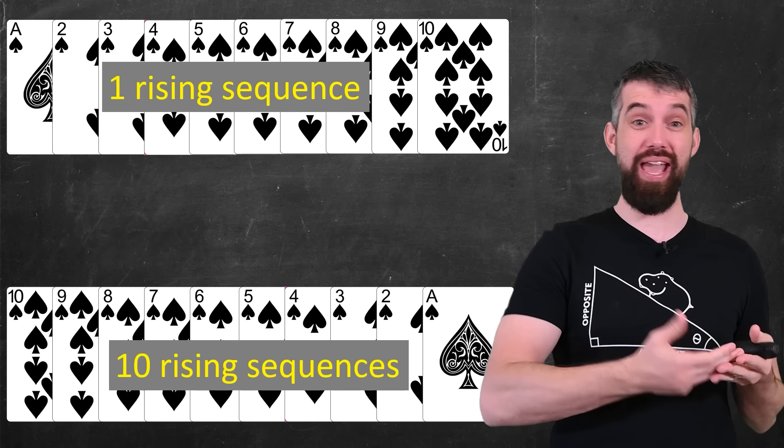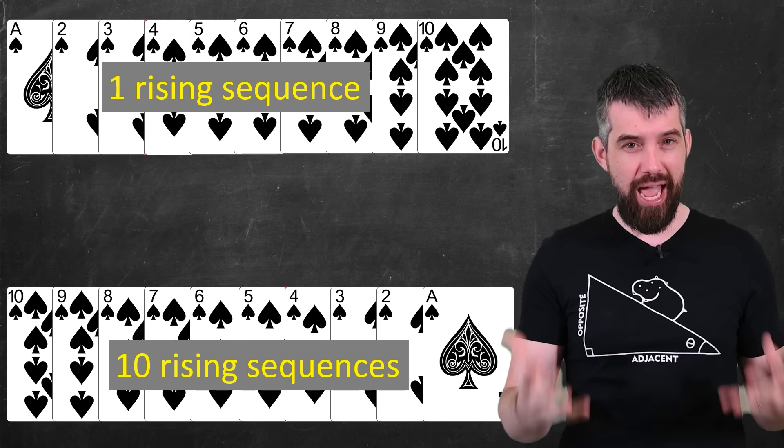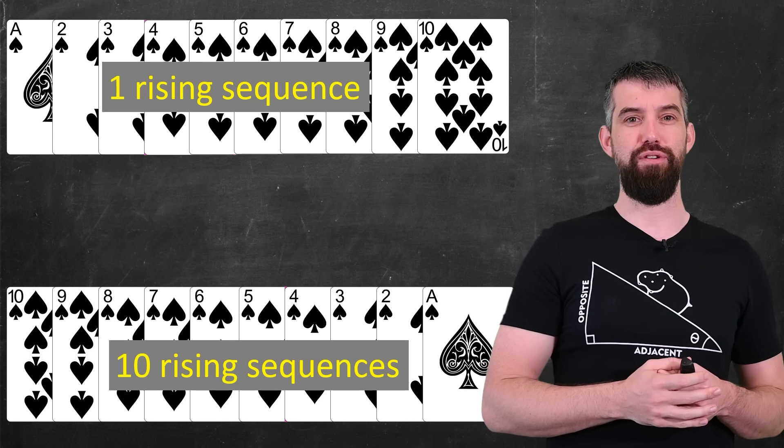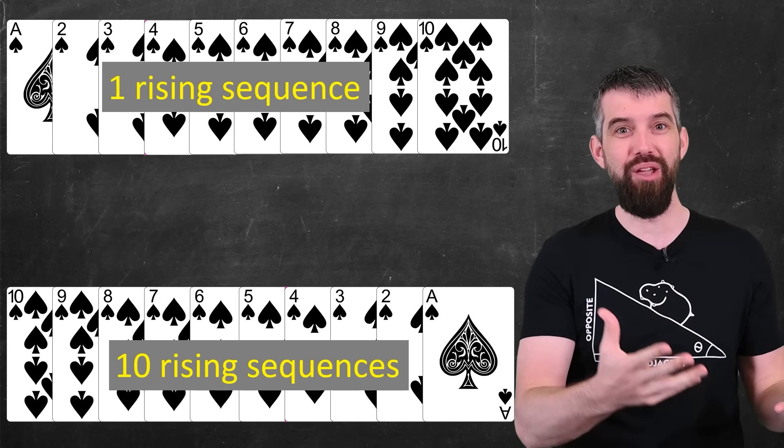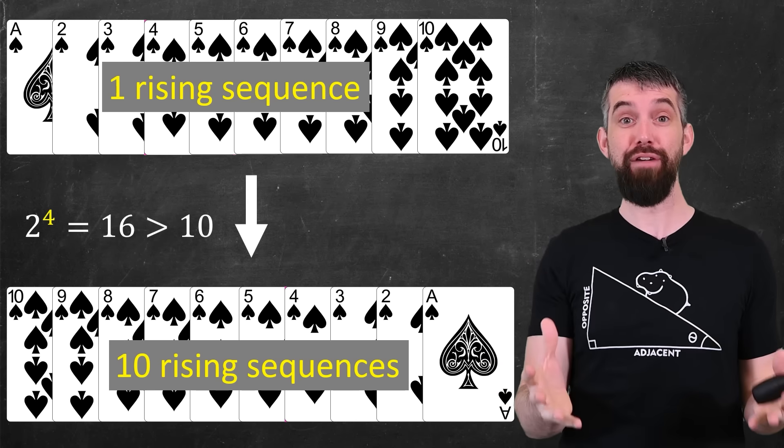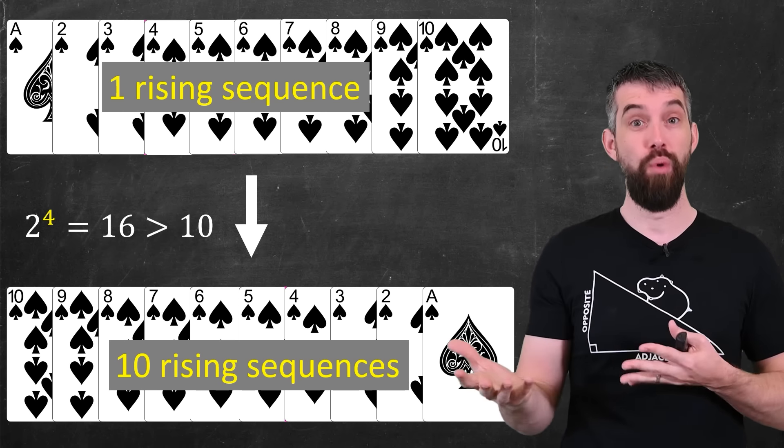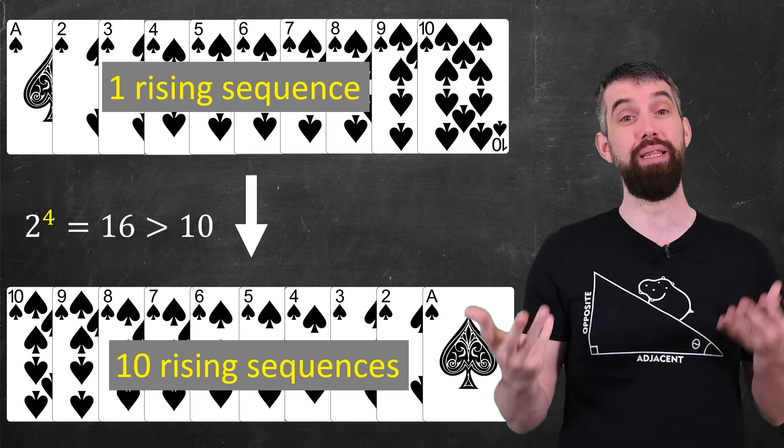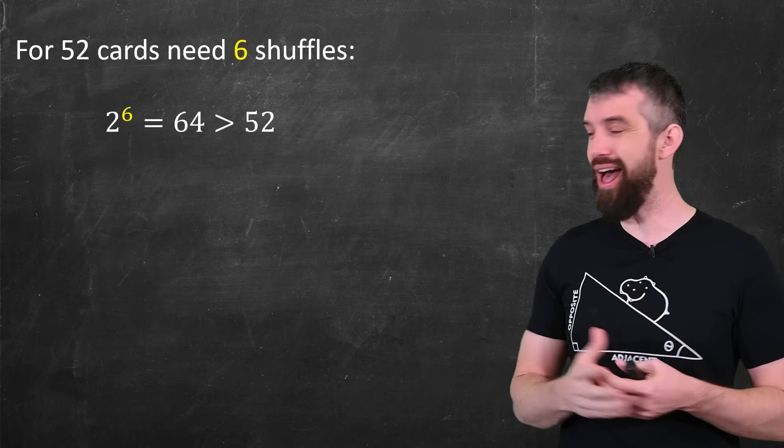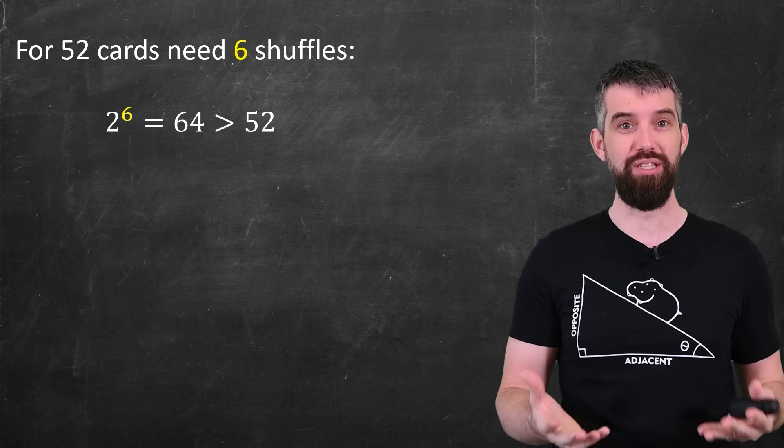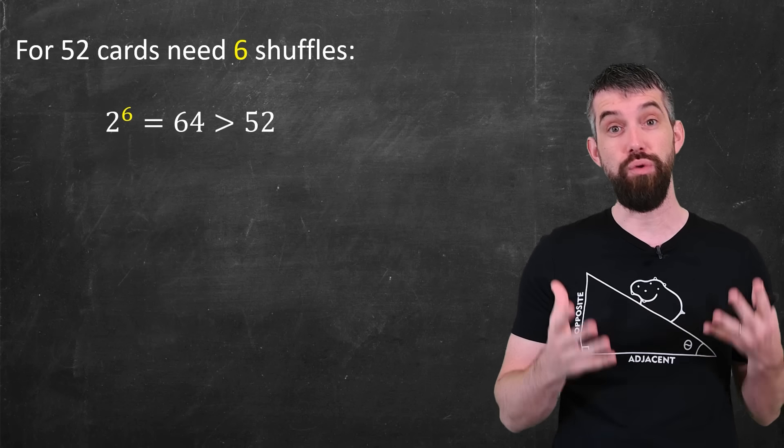So then the question is, if I started with them ace through 10, the normal configuration, how many shuffles do I have to do to be able to get this thing with 10 rising sequences? Well, what we analyzed is that if you do one normal two shuffle, you can get two rising sequences. Two normal shuffles, then you get four. Three would give you eight. This means I have to do four shuffles to make this even possible as an outcome. If I take two to the power of four, I get 16 and that's more than 10, but two to the power of three would be eight, which would be less than 10. But if I go to 52 cards, then I'm going to need six full shuffles. Two to the five is only 32 and I would never get that descending sequence possible. I need to do a six shuffle so they have two to the six possible rising sequences. That is finally bigger than 52, the number of cards in a standard deck.